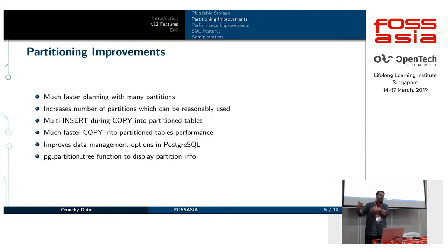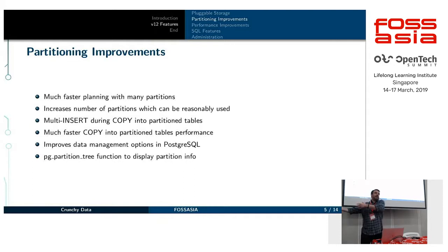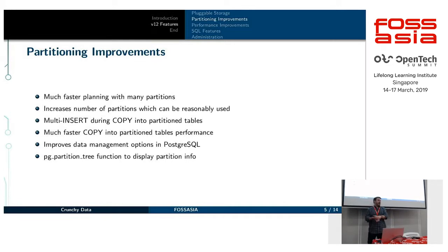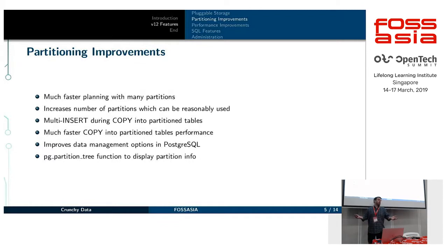The initial versions of declarative partitioning in Postgres still used the inheritance-type planner because it was easier to get things working that way. But it meant we were still limited — we couldn't have more than a few hundred partitions before query planning started to really suffer. A lot of work has gone into V12 to fix that, to make it so you can have thousands of partitions and things will still be performant.